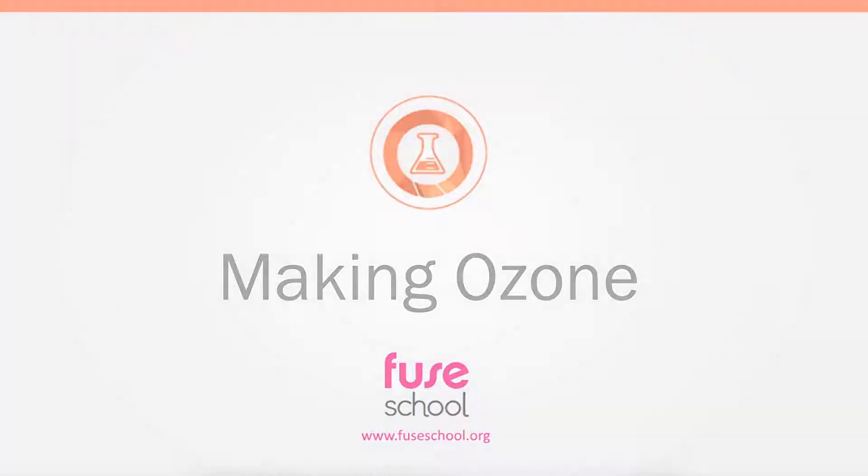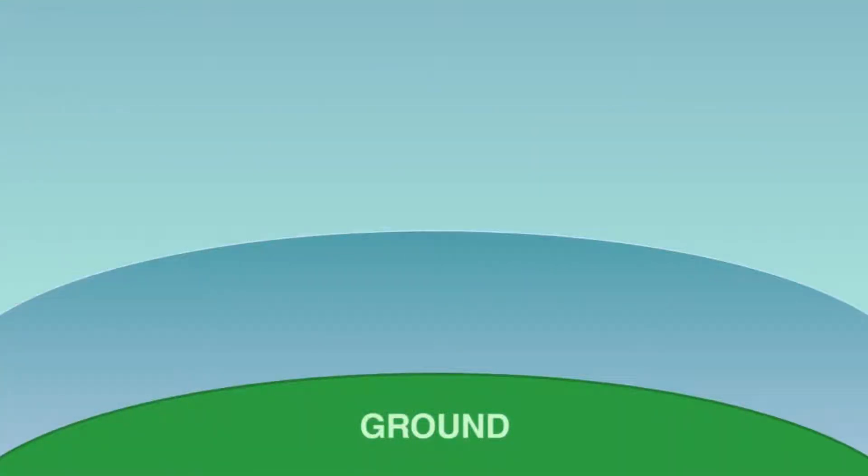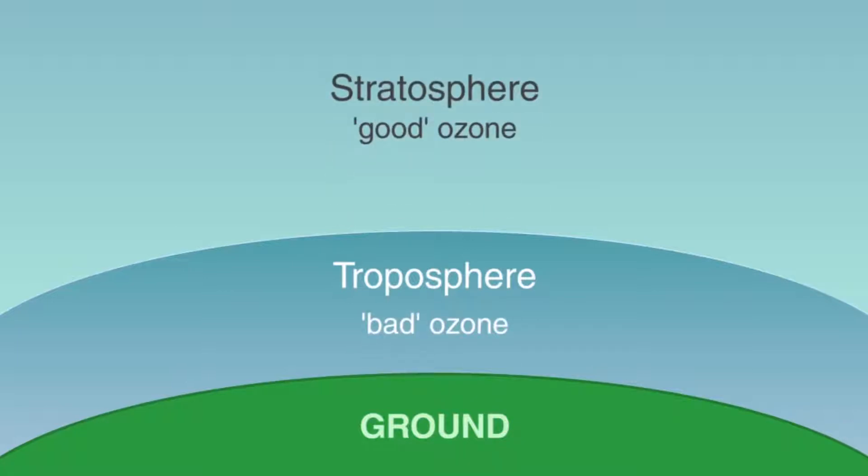In this video we will learn about the two main layers of our atmosphere, the troposphere full of weather and bad ozone, and above that the stratosphere where good ozone protects us against dangerous ultraviolet light.